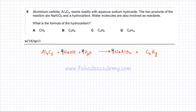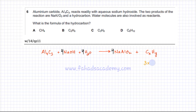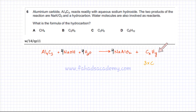Now we balance carbon and hydrogen, because doing so will let us figure out the formula of the hydrocarbon. There are three carbons in Al4C3, so there should be three carbons in the hydrocarbon. For hydrogen, there are four hydrogens in NaOH and eight in four H2O molecules, giving a total of 12 hydrogens. So there should be 12 hydrogens in the hydrocarbon.